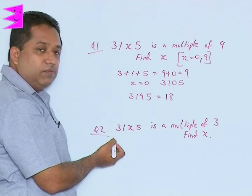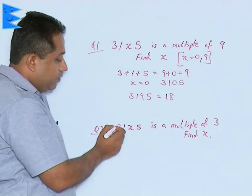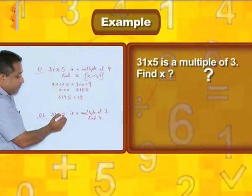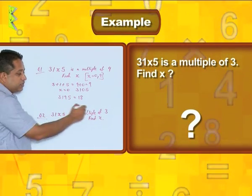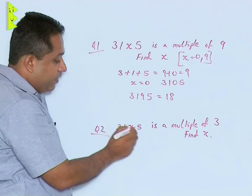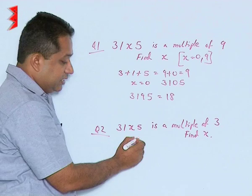Here we have another example of the same type but now it is a multiple of 3. So we have 31x5 is a multiple of 3. So this is a 4-digit number and it is a multiple of 3. So add up this we get 5 plus 3, 8, 8 plus 1, 9 plus x.